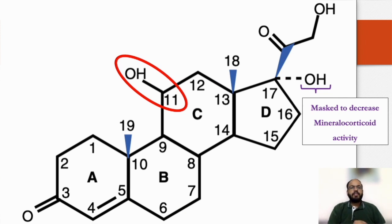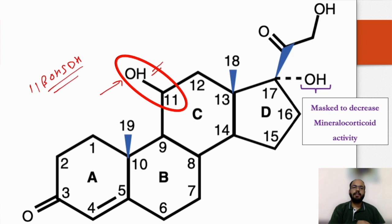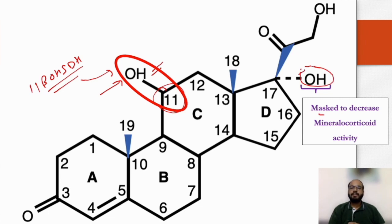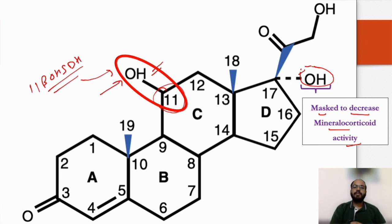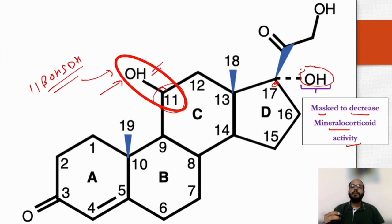The conversion of the ketone to hydroxyl at the 11th position is catalyzed by 11-beta hydroxysteroid dehydrogenase in the liver. Further addition of a hydroxyl group at the 17th position masks the molecule and decreases its mineralocorticoid activity. When the OH group attaches to the 17th position, mineralocorticoid activity decreases — which is very helpful, as we want increased glucocorticoid activity and decreased mineralocorticoid activity.